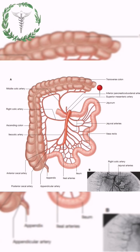It has the following branches. We've got the inferior pancreaticoduodenal artery, which supplies the head of the pancreas as well as the third part of the duodenum.